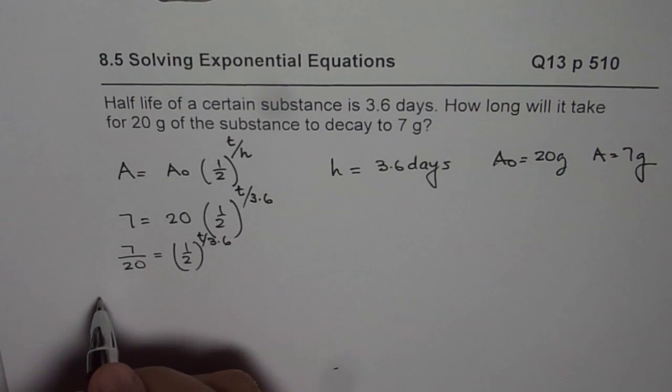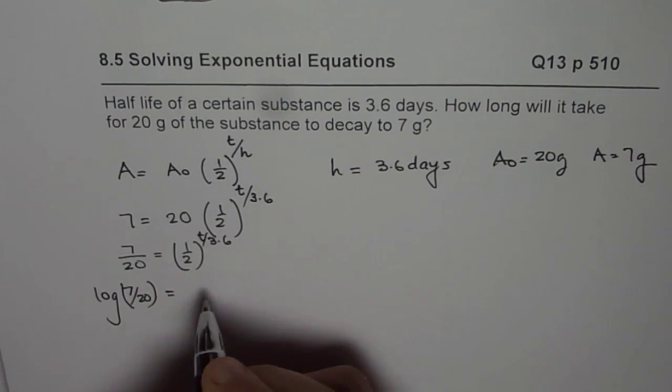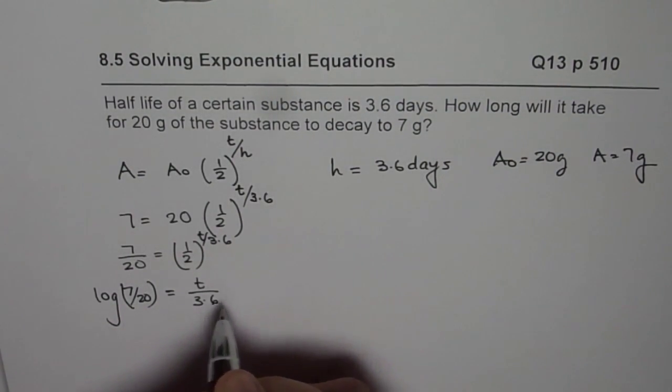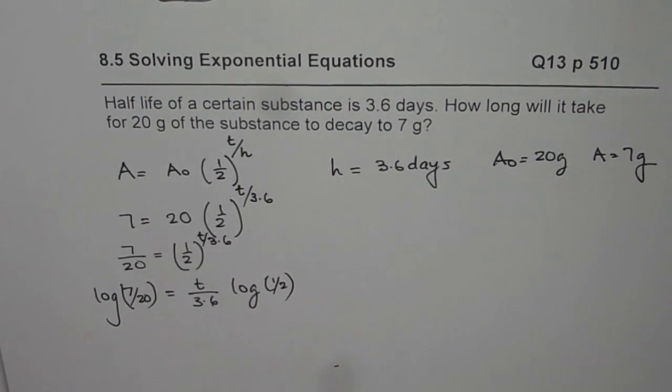And now we can take log on both sides. So we get log of 7 over 20 equals t over 3.6 log of half. That is power rule for logarithms.